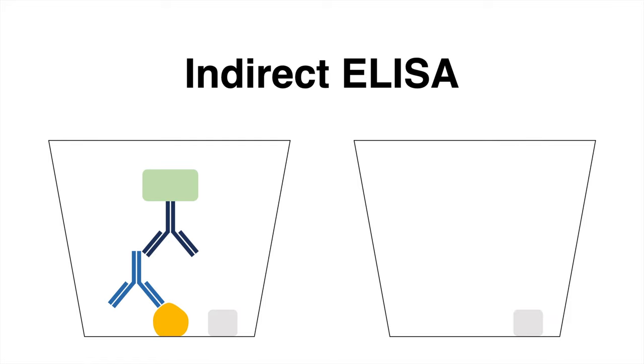Now, the wells are filled up with a solution containing a substrate. The enzyme linked to the secondary antibody converts the substrate to a product which leads to a color change. The intensity can be detected using spectrophotometry.